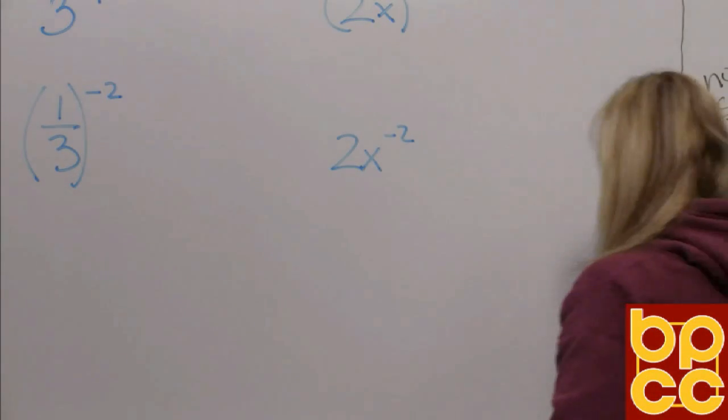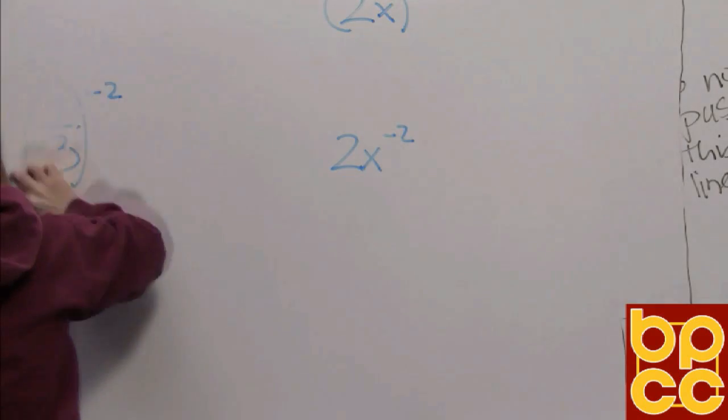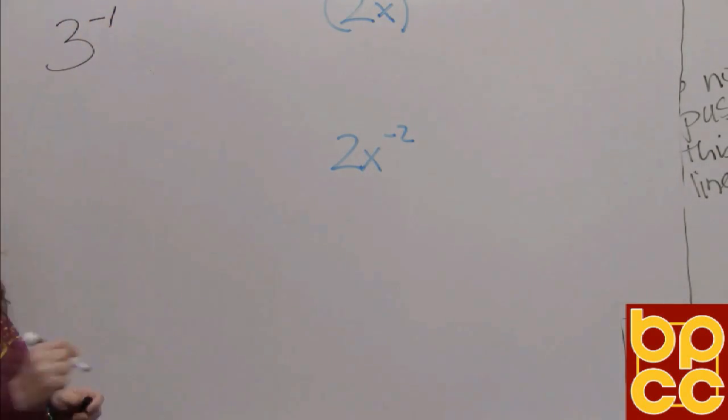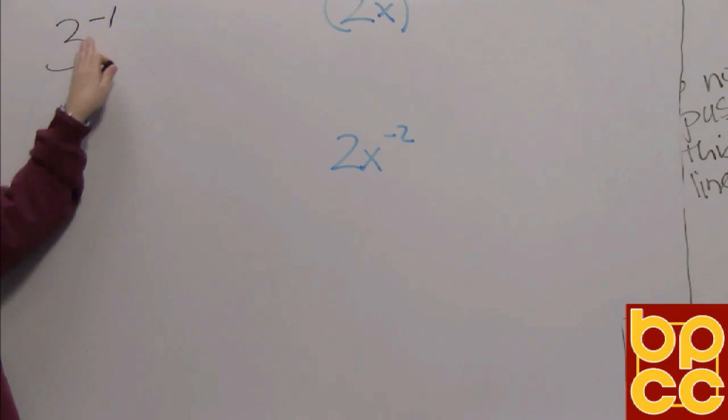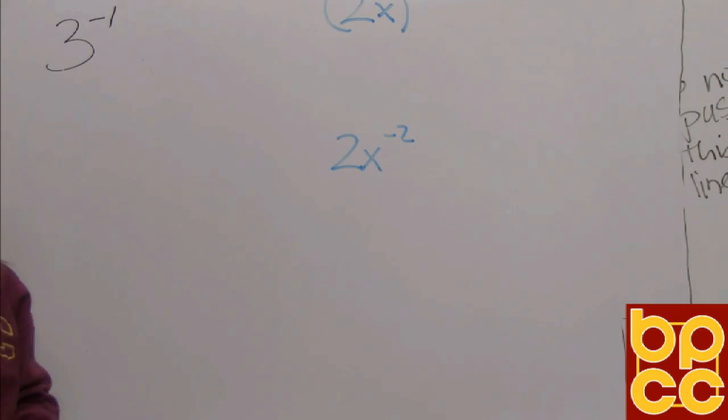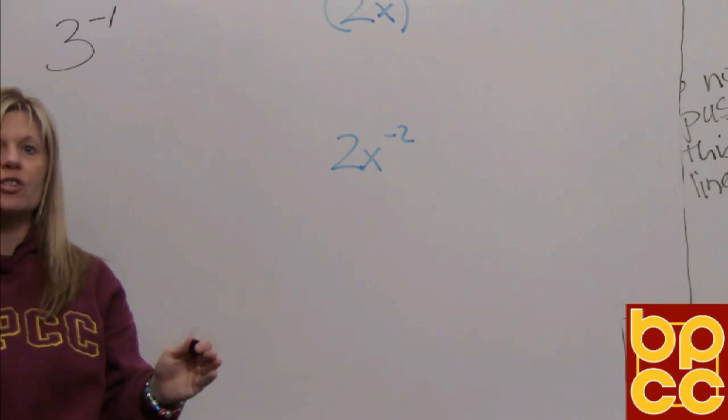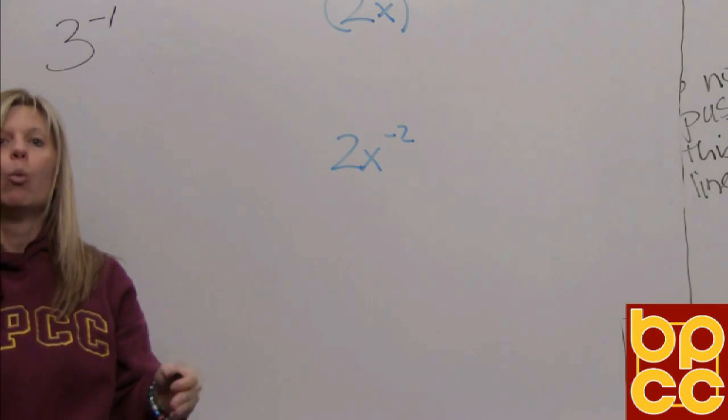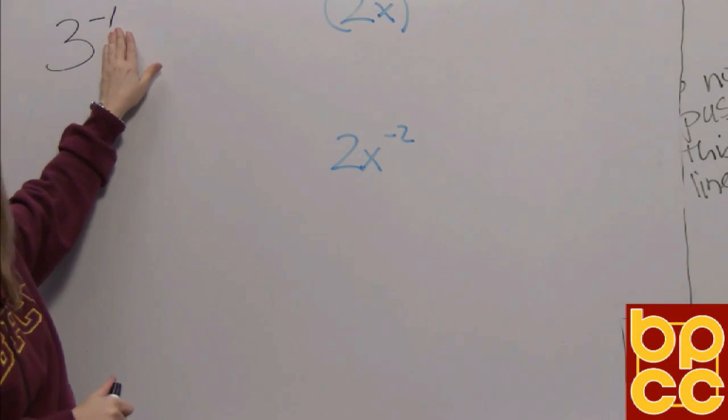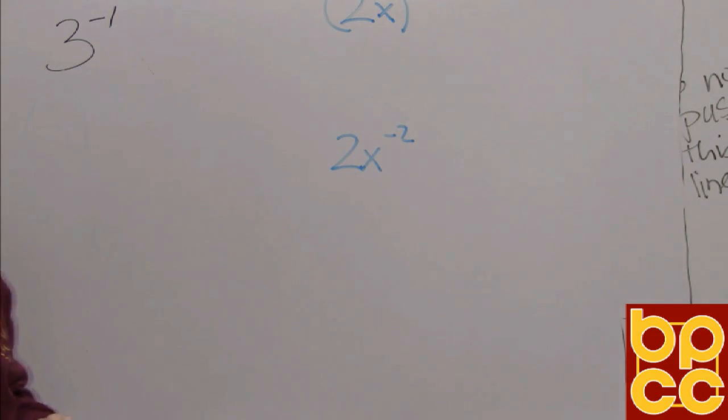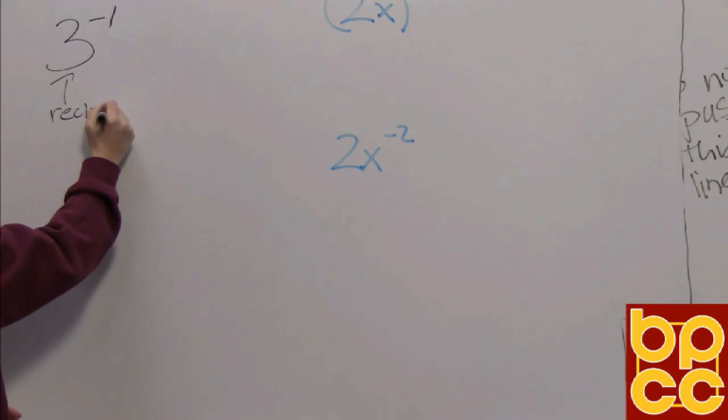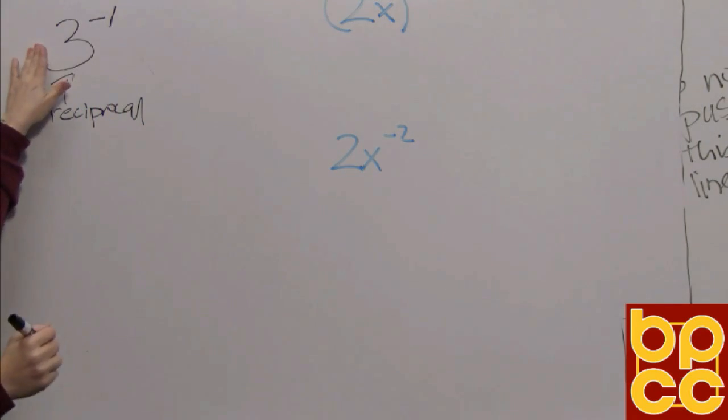If we go up to the board, let's look at this example. We have 3 to the negative 1. Again, you cannot write this base negative 1 times. So in algebra we talk about there is no such thing as a negative exponent. What you have to do is a magic trick. You have to make this exponent always positive. And the way you do that, the rule is you do the reciprocal of this base.